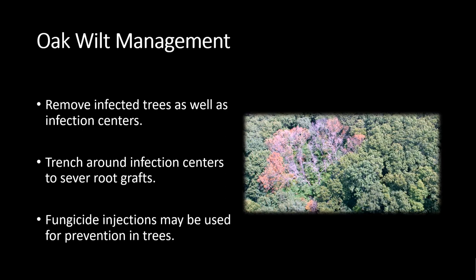Oak wilt is very difficult to manage and very costly. Strategies for control include preventing new infection centers and limiting expansion of existing ones. For this strategy, you must remove the diseased trees and trench around the buffered infection centers to sever root grafts. These practices do not reverse the symptoms; however, the goal is preventing infection from spreading to healthy trees. Fungicide injections may only be used as preventative measures and only work on trees that do not show symptoms.